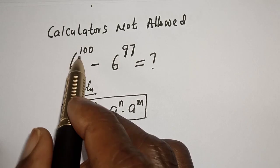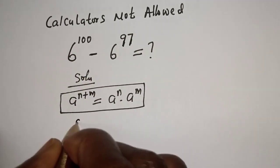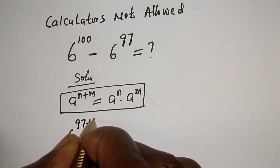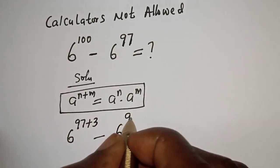Then 6 raised to power 100 can be written as 6 raised to power 97 plus 3, minus 6 raised to power 97.